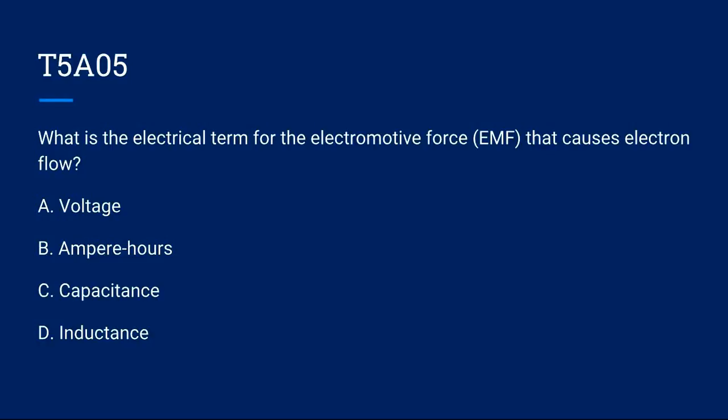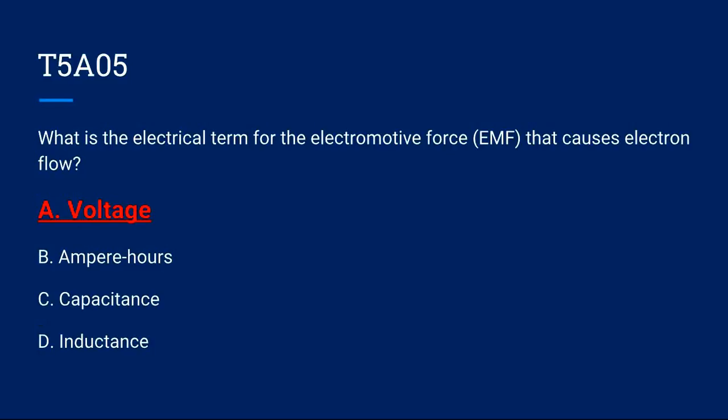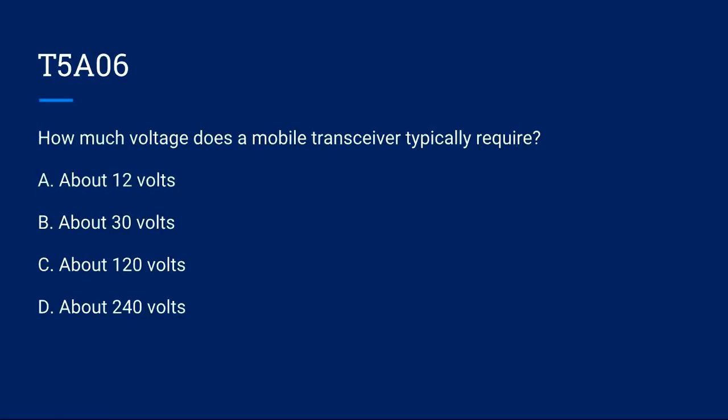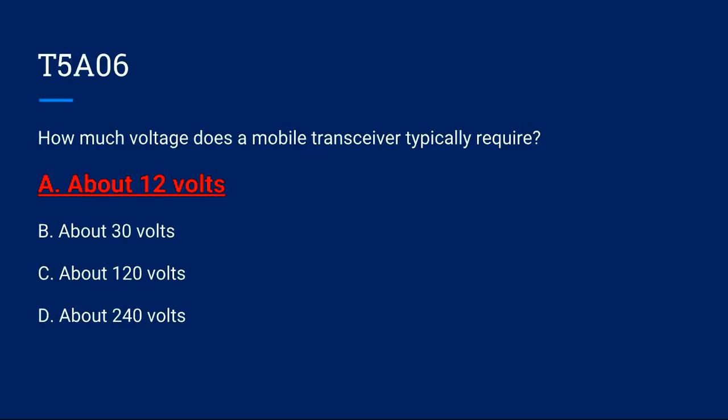T5A05, which is the electrical term for the electromotive force that causes electron flow? A. Voltage, B. Ampere hours, C. Capacitance, or D. Inductance. The correct answer is A. Voltage. T5A06, how much voltage does a mobile transceiver typically require? A. About 12 volts, B. About 30 volts, C. About 120 volts, or D. About 240 volts? The correct answer is A. About 12 volts.